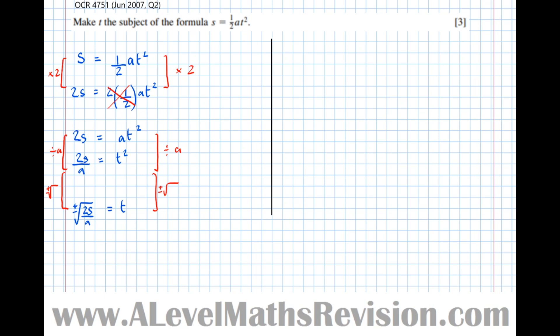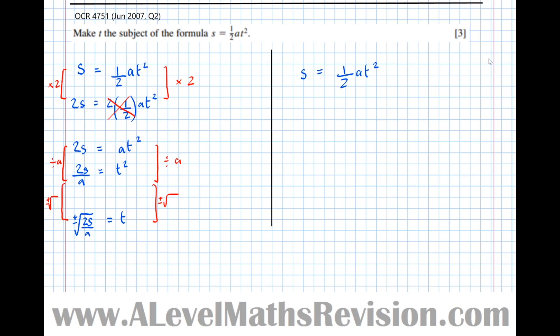I'm going to do exactly the same question but in the way that I prefer. S equals a half A T squared. What we've done to T: we've squared it, then times by A, then times by a half. We're going to undo that, peel off the layers from the outermost layer first. The last thing we did was times by a half, so to undo that we're going to times by 2. I'm going to introduce a new symbol with an equals sign with an arrow attached to it. That symbol means leads to the direct consequence, or the technical name is 'implies that.'